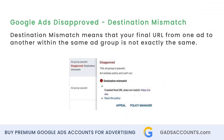In this video we will talk about Google Ads disapproval for destination mismatch. Destination mismatch means that your final URL from one ad to another within the same ad group is not exactly the same.